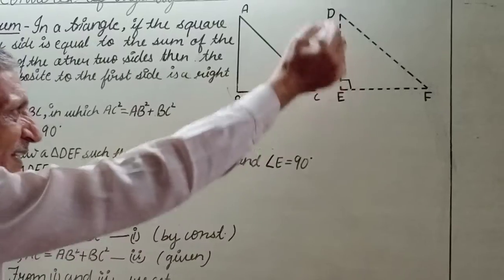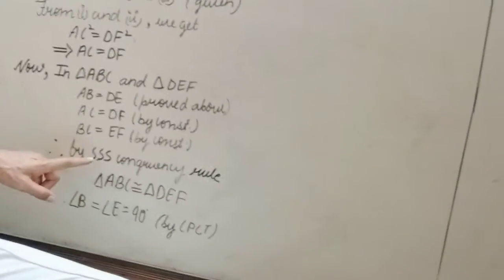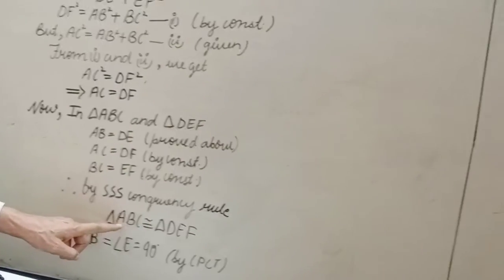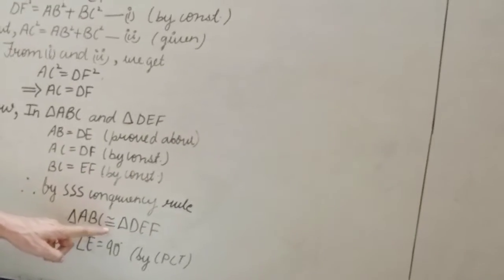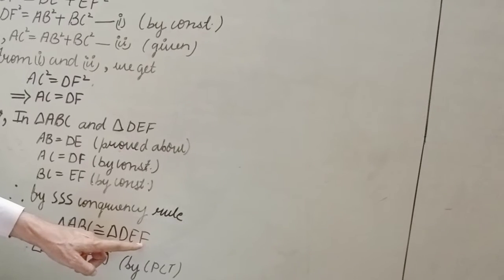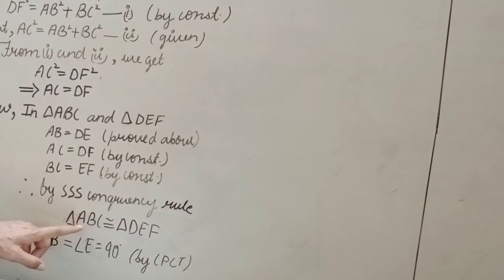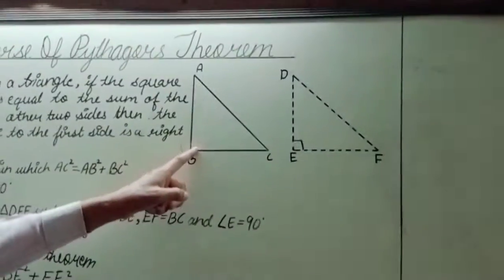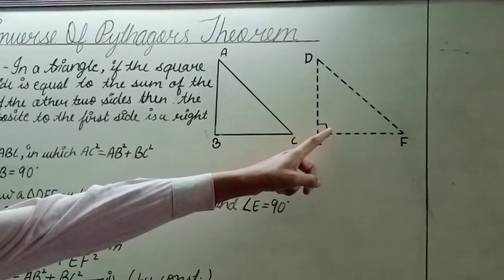Therefore, by SSS congruency rule, we have triangle ABC congruent to triangle DEF. And, once these two triangles are congruent, then angle B = angle E.